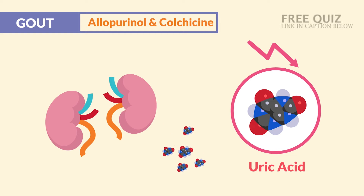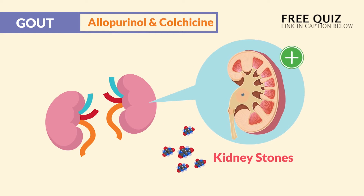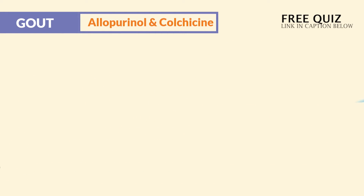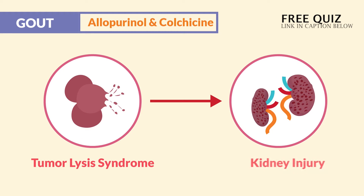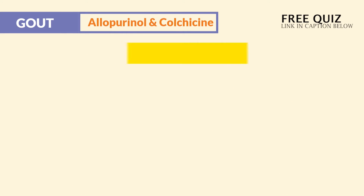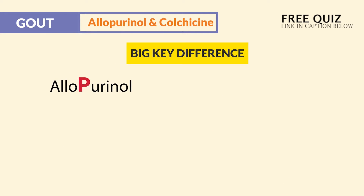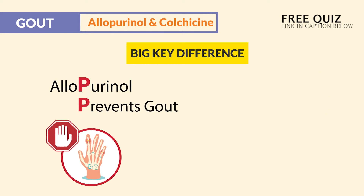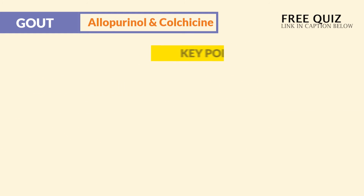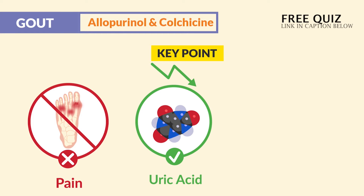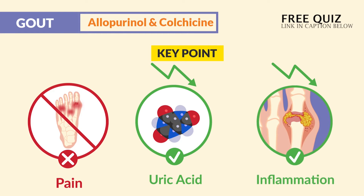Now, normally uric acid is excreted by the kidneys, so it also helps with kidney stones and helps with tumor lysis syndrome — that TLS — which can lead to kidney injury. The big key difference is allopurinol prevents gout to reduce uric acid, and colchicine is given for acute gout attacks. So the key point is that these drugs are not used to reduce pain, but rather to reduce the uric acid, which reduces the inflammation.